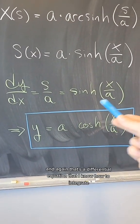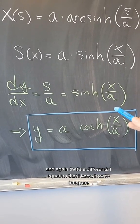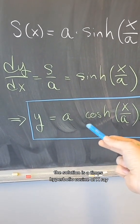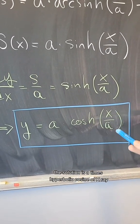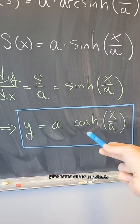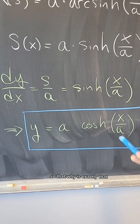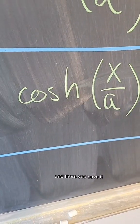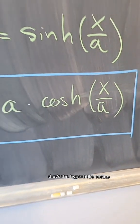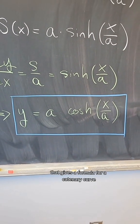And again, that's a differential equation that I know how to integrate. The solution is A times hyperbolic cosine of X over A plus some other constants, but you can readjust again so that Y is exactly that. And there you have it. That's the hyperbolic cosine that gives a formula for a catenary curve.